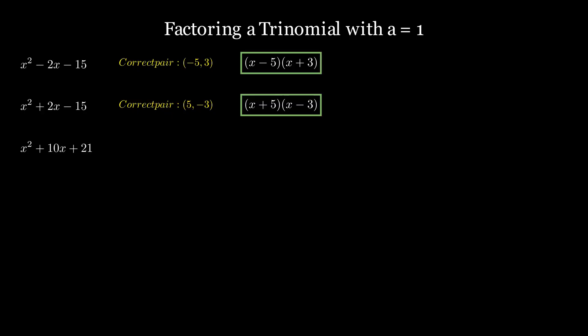Now, let's look at x squared plus 10x plus 21. This time, the two numbers must add up to plus 10 and multiply to plus 21. The pair that works is plus 3 and plus 7, so the trinomial factors as x plus 3 times x plus 7.